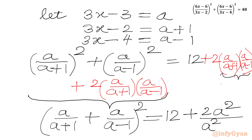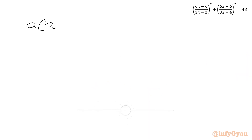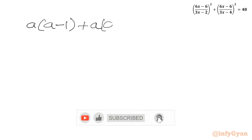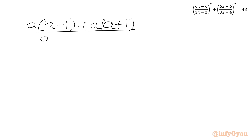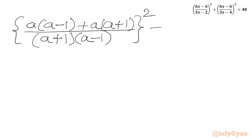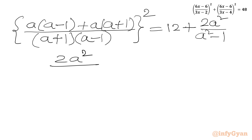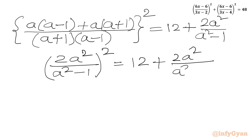On the RHS we will write 12 plus 2 times a times a over (a+1)(a-1), which equals a squared minus 1. Now simplifying the bracket: a(a-1) plus a(a+1) over (a+1)(a-1), whole squared. The plus and minus terms cancel, leaving 2a squared in the numerator and a squared minus 1 in the denominator, whole squared, equal to 12 plus 2a squared over (a squared minus 1).